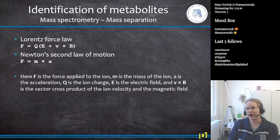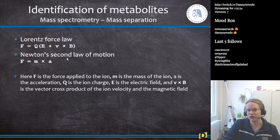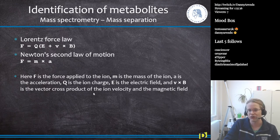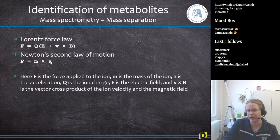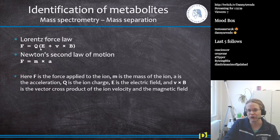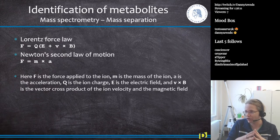Mass spectrometry is based on two fundamental physical laws: the Lorentz force law and Newton's law of motion. F = MA, where F is the force applied to the ion, M is the mass, and A is the acceleration. Additionally, the force equals Q times E plus V cross B, where Q is the ionic charge, E is the electric field, V is the ion velocity, and B is the magnetic field. These two laws underpin mass separation in the instrument.